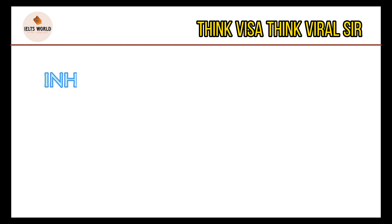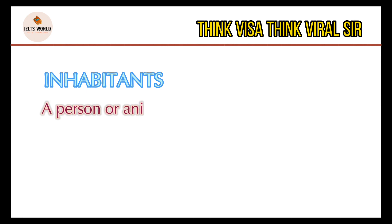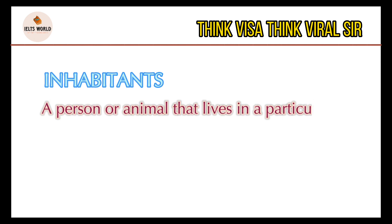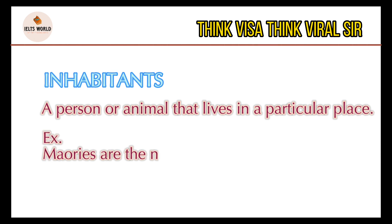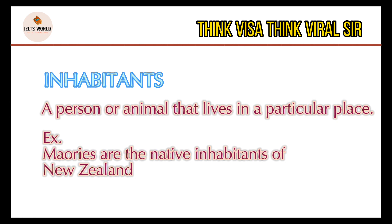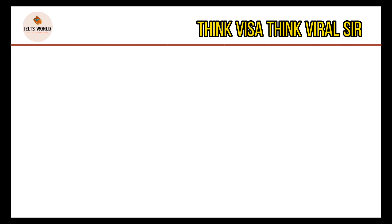Let us move to the next word. The next word is 'inhabitants,' and the meaning of this word is a person or animal that lives in a particular place. For example: Maoris are the native inhabitants of New Zealand. Inhabitants is a word that you find normally in your reading section.